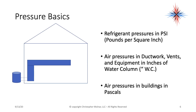Refrigerant pressures are measured in psi — pounds per square inch. Air pressures in ductwork, vents, and equipment are measured in inches of water column. Air pressures in buildings are measured in pascals. To summarize: refrigerant — pounds per square inch; ductwork, vents, and equipment — inches of water column; buildings — pascals.